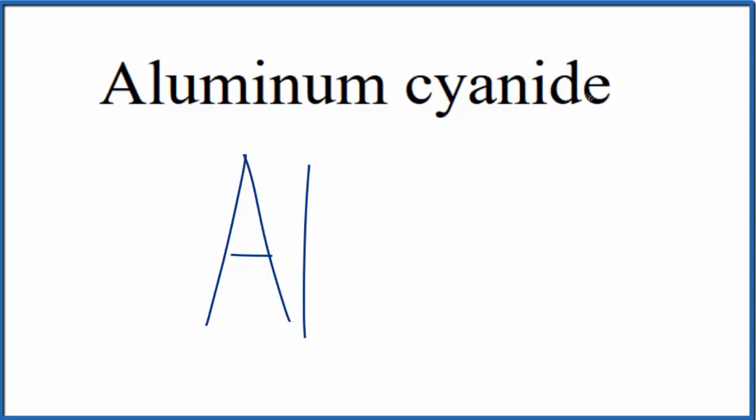This cyanide here, you won't find this on the periodic table. This is a polyatomic ion. So you either memorize that the cyanide ion, that's C-N, and has an ionic charge of 1-, or if you're allowed, you look it up on a table of polyatomic ions.